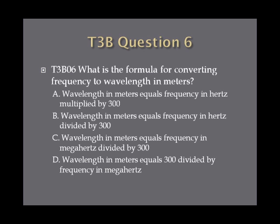Question 6. What is the formula for converting frequency to wavelength in meters? A, wavelength in meters equals frequency in hertz multiplied by 300. B, wavelength in meters equals frequency in hertz divided by 300. C, wavelength in meters equals frequency in megahertz divided by 300. Or D, wavelength in meters equals 300 divided by frequency in megahertz.